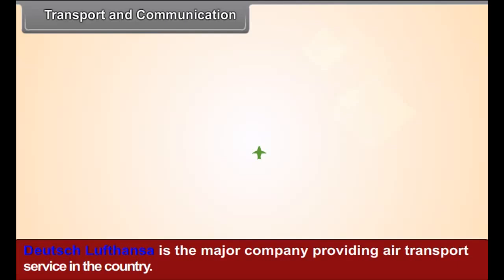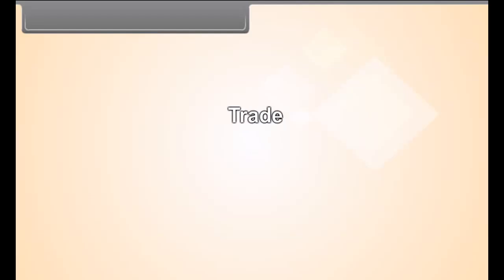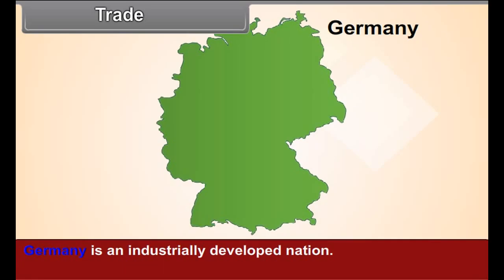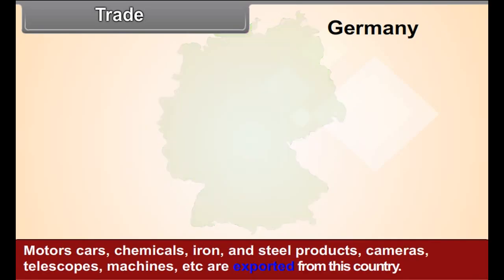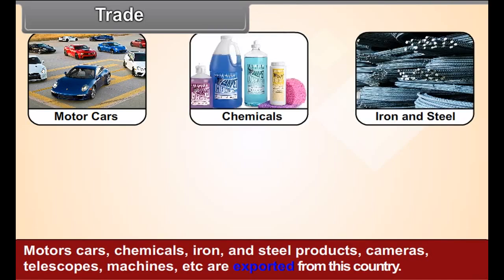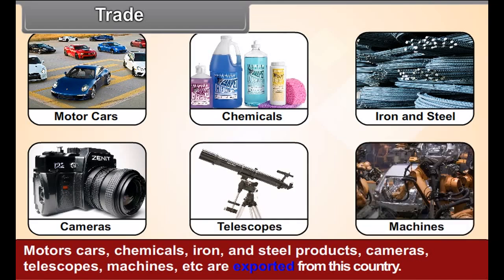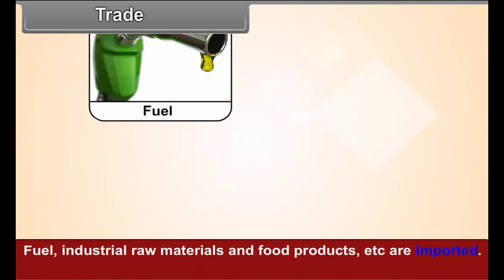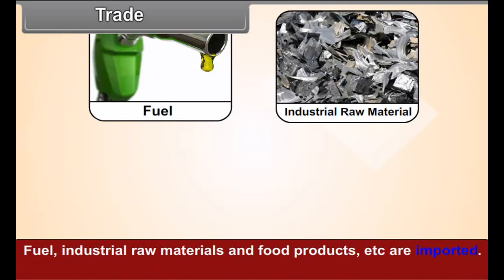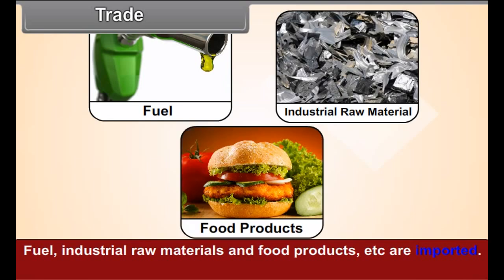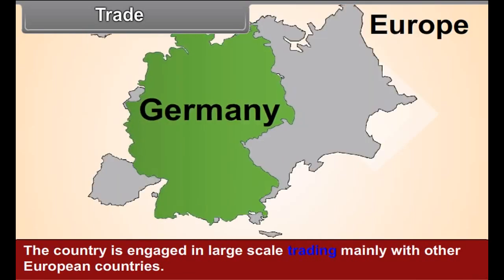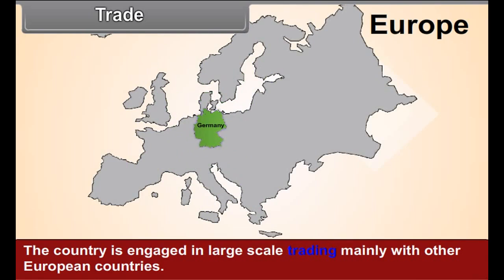Lufthansa is a major company providing air transport service in the country. Germany is an industrially developed nation. Motor cars, chemicals, iron and steel products, cameras, telescopes, machines, etc. are exported from this country. Fuel, industrial raw materials, and food products are imported. The country is engaged in large-scale trading mainly with other European countries.